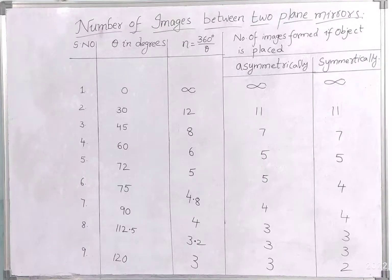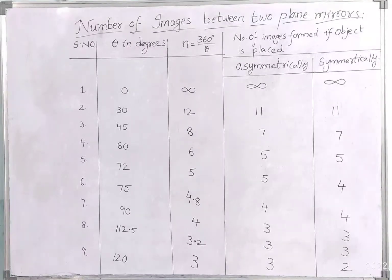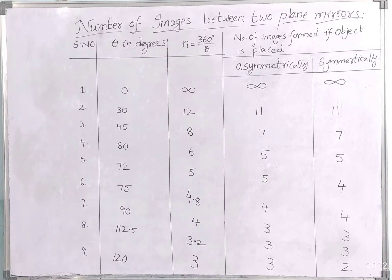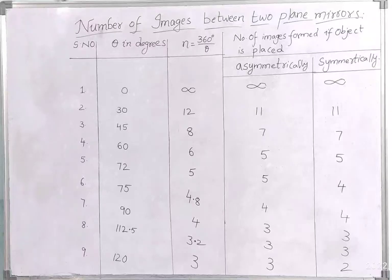In the first situation, the angle between the two plane mirrors is 0 degrees, meaning the two mirrors are placed parallel to each other. Whenever two plane mirrors are placed parallel to each other, an infinite number of images are formed due to multiple reflections. So the result is infinity whether the object is placed asymmetrically or symmetrically.